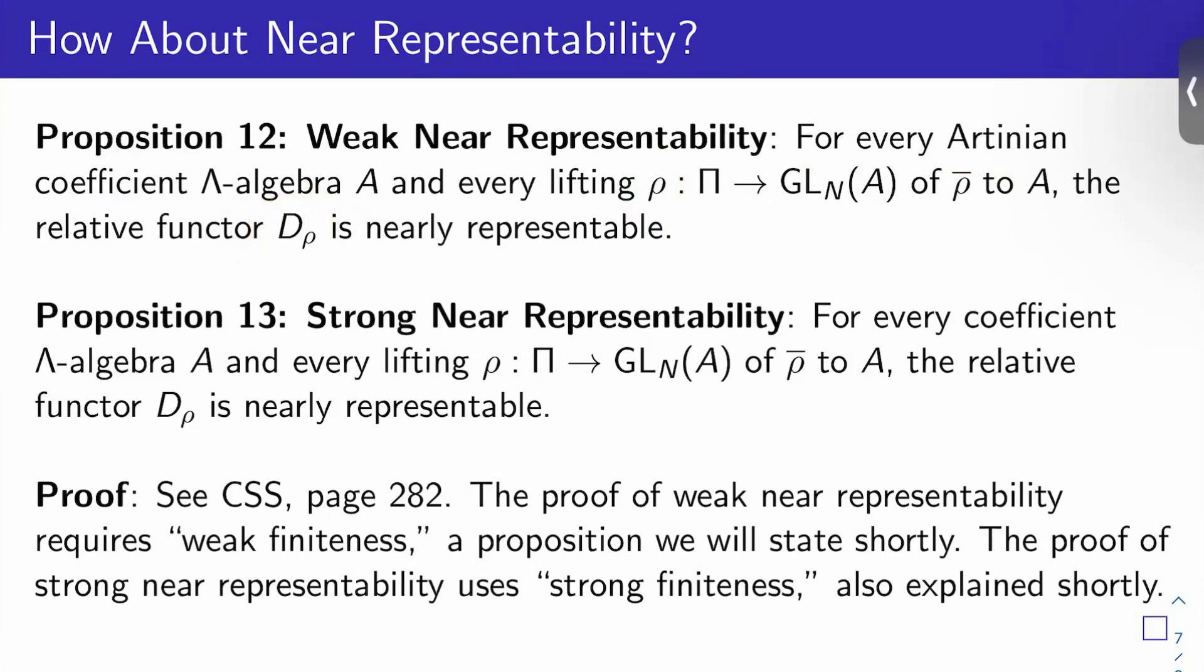And then strong near representability: for every coefficient lambda algebra A and every lift rho from pi to GLN of A of rho bar to A, the relative functor D sub rho is also nearly representable. So you can basically remove the word Artinian here.